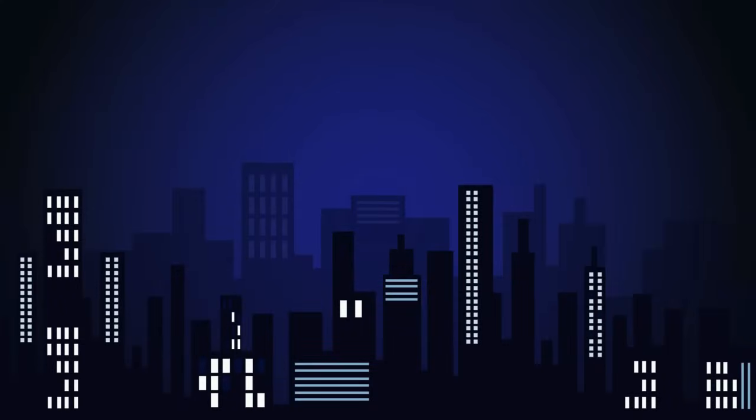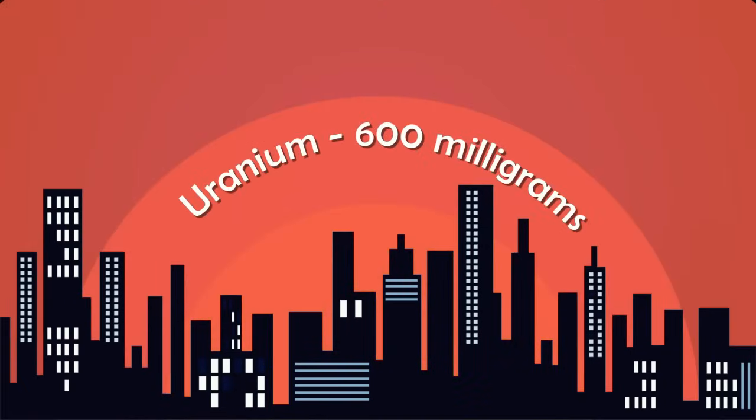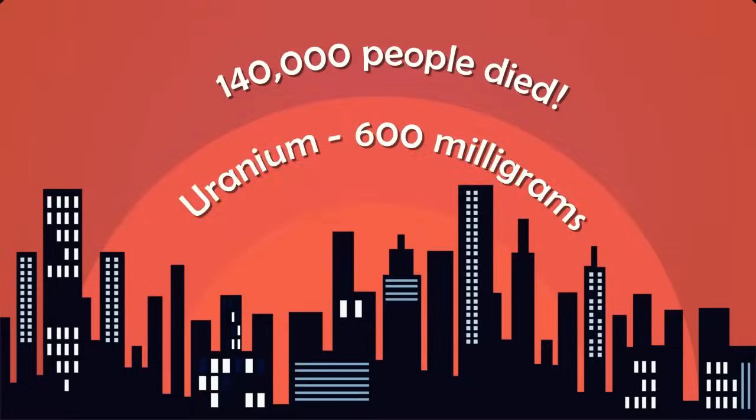Same is true in the case of the atomic bomb used to destroy Hiroshima, which required only 600 milligrams of uranium, less than the weight of a dime. Only 600 milligrams of uranium generated the energy to kill 140,000 people. Converting matter to energy is tricky.